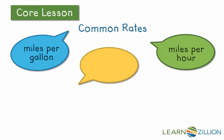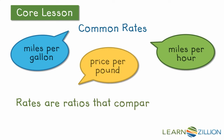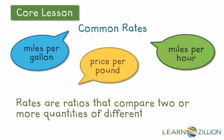Or maybe you help do the grocery shopping and you know that produce and deli meats are given a price per pound. All of these are common rates. And you may notice — miles per gallon, price per pound, miles per hour — what makes a rate special is that a rate is a ratio that compares two or more quantities of different measures.